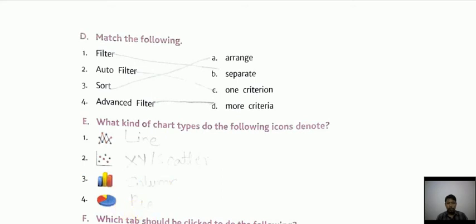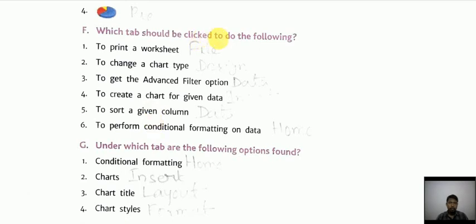Which tab should be clicked to do the following? First one, to print a worksheet: file tab. To change the chart type: design tab. To get the advanced filter option: data tab.